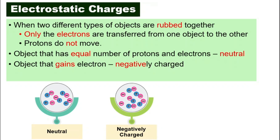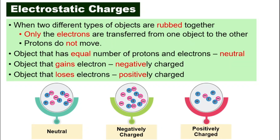When you have more electrons compared to protons, that object becomes negatively charged. The other object that lost electrons — with only two electrons remaining and five protons — has more protons, so that object becomes positively charged.